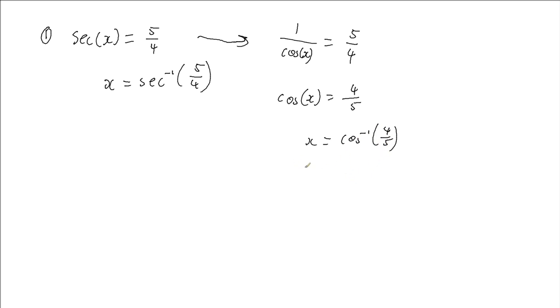And if you go and put that into your calculator, you'll find that we get 36.87 degrees if we do this in degrees. And so that means that we get the inverse secant of 5 quarters is the inverse cos of 4 fifths.